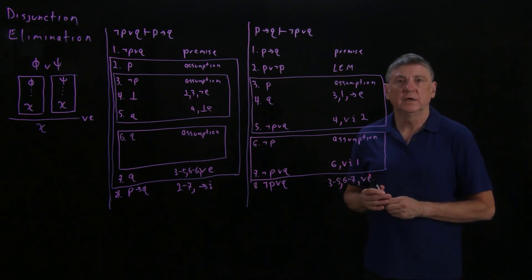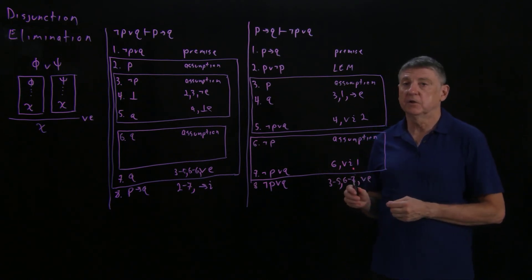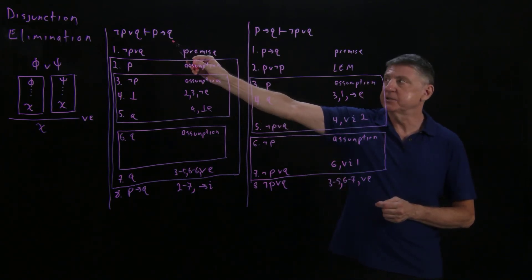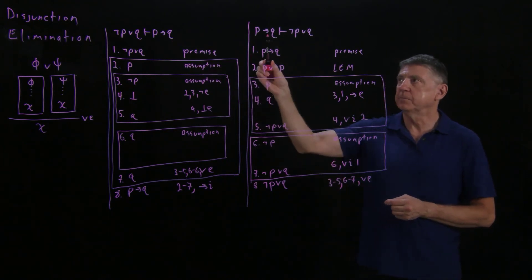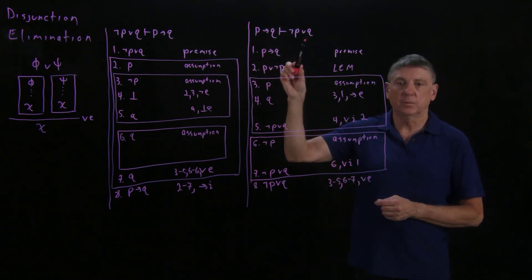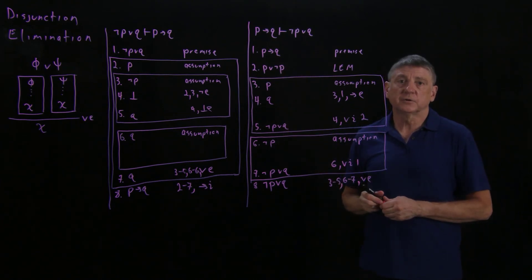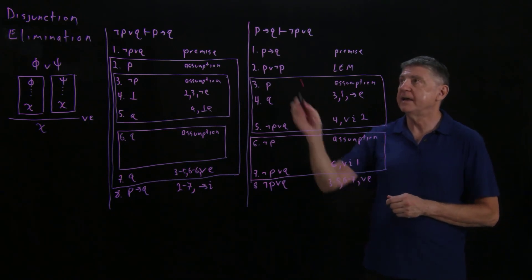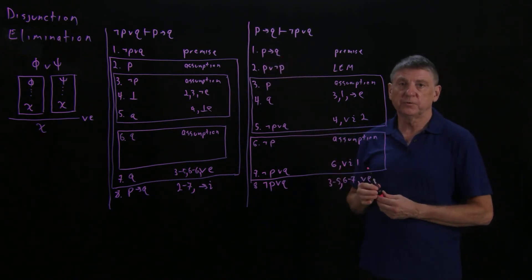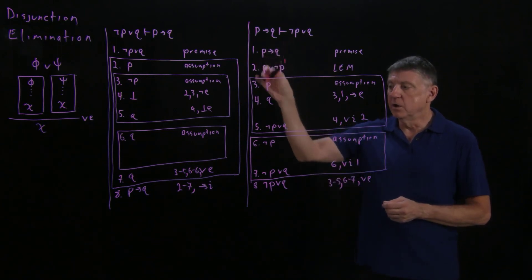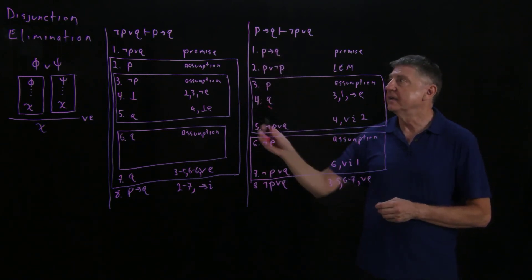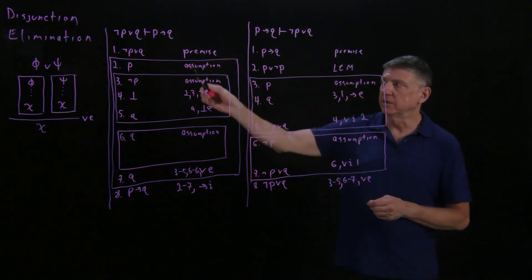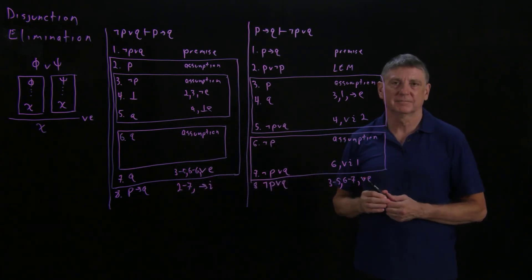What we've shown is referred to as an equivalence in logic. We've shown that from ¬P ∨ Q we can arrive at P → Q, and from P → Q we can arrive at ¬P ∨ Q. Natural deduction doesn't let us do substitutions, but if we arrive at an implication and a disjunction would prove more useful, we know there's a proof that will take us there — and likewise, if we have a disjunction and need an implication, we know a proof exists.